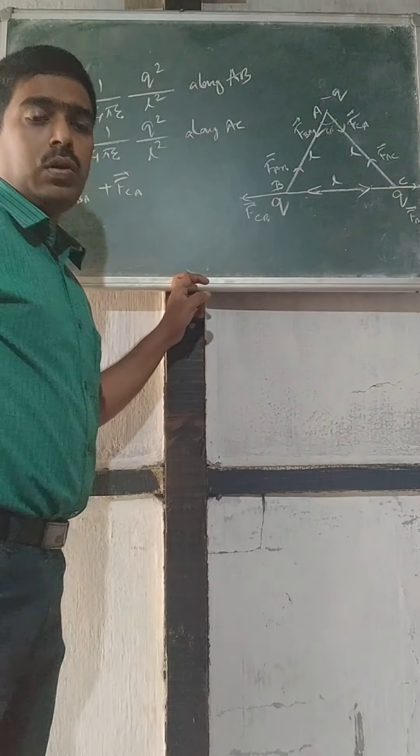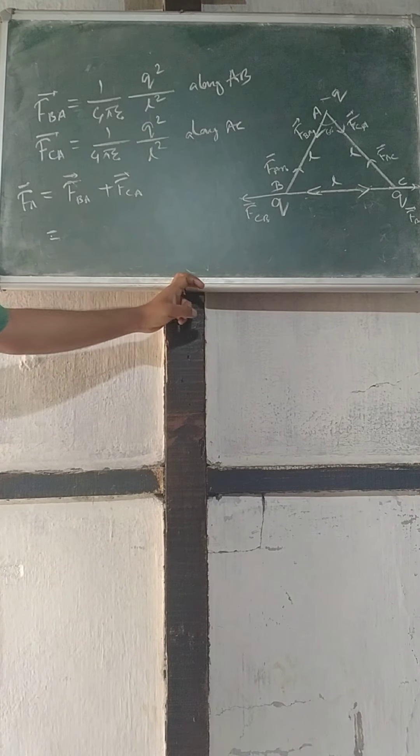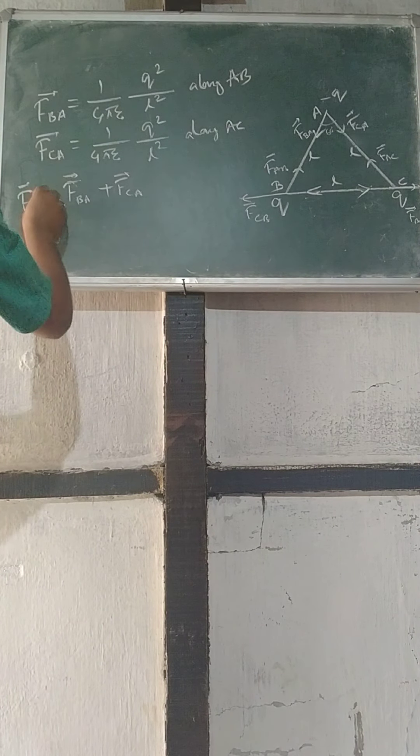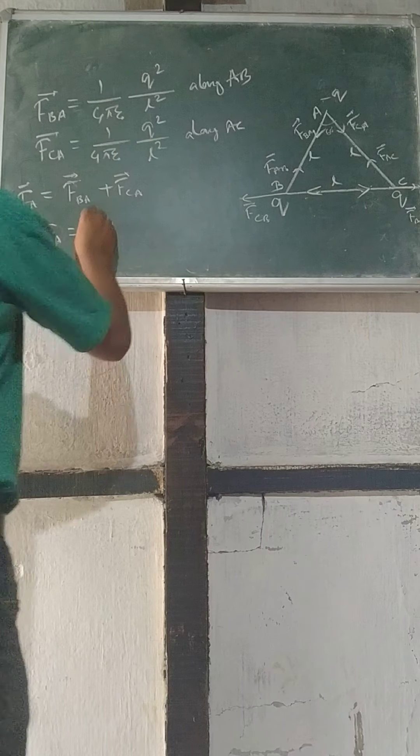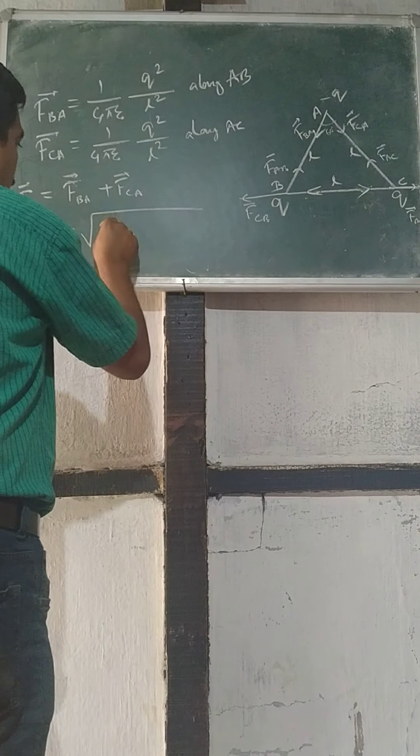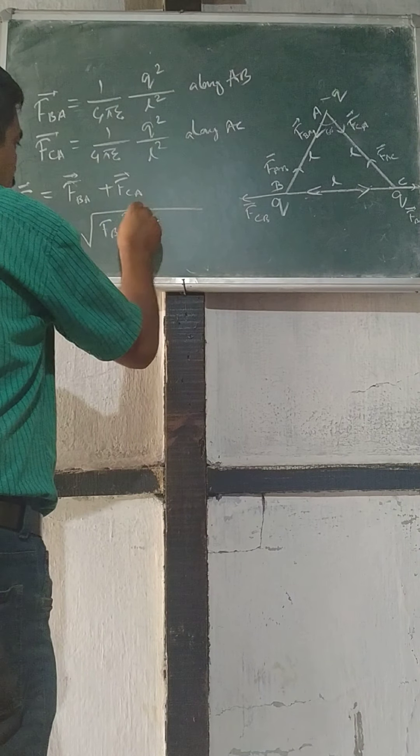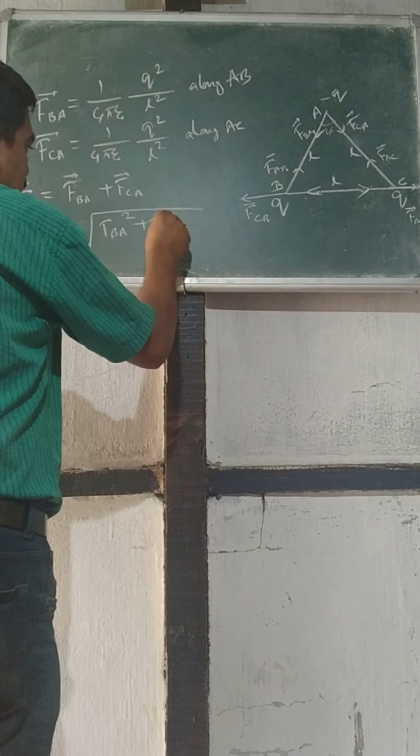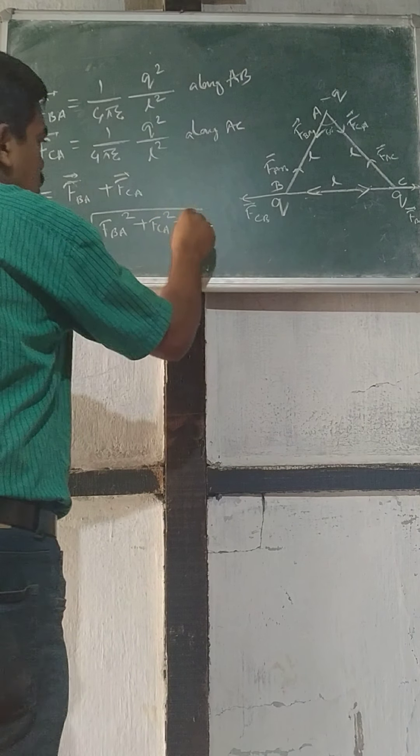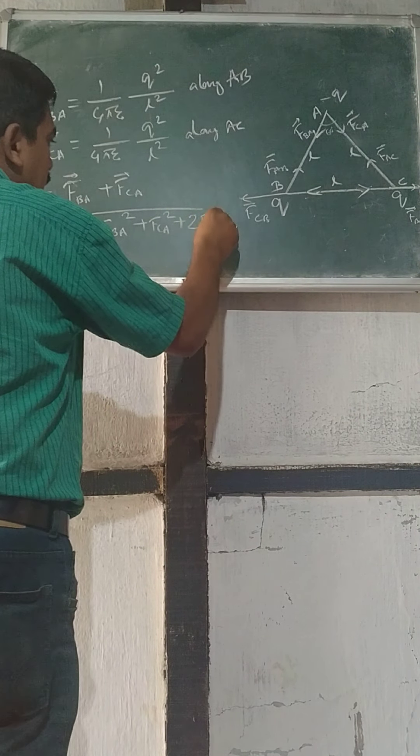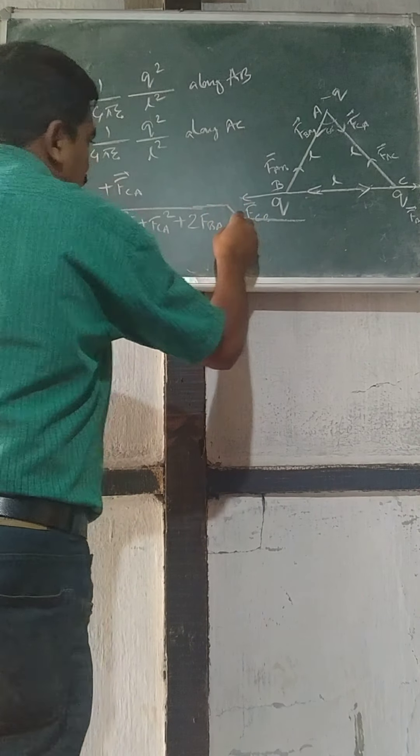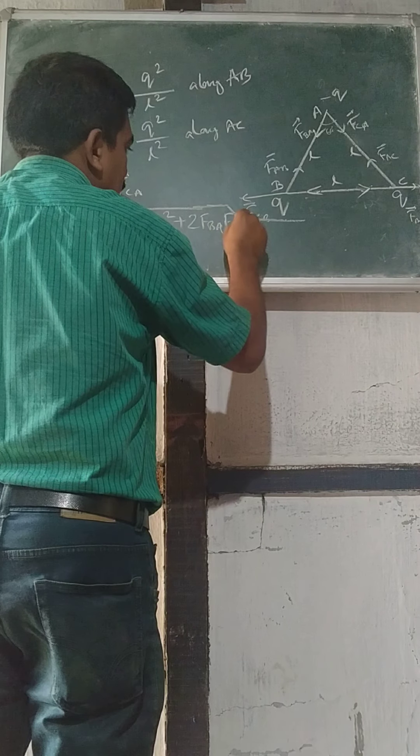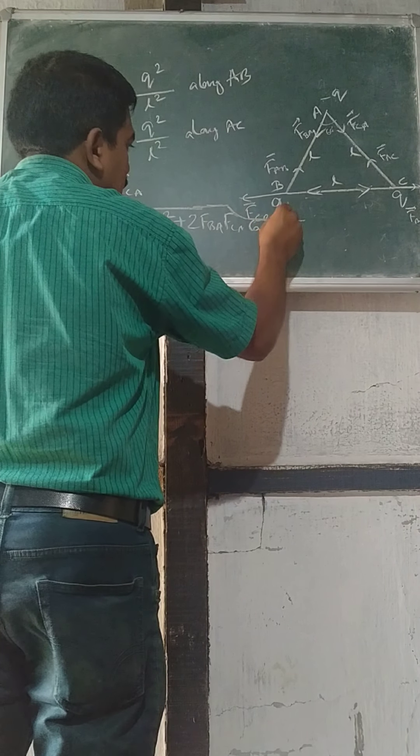So it will be F_A vector equal to F_A equal to square root of FBA square plus FCA square plus 2 FBA FCA cos 60 degree.